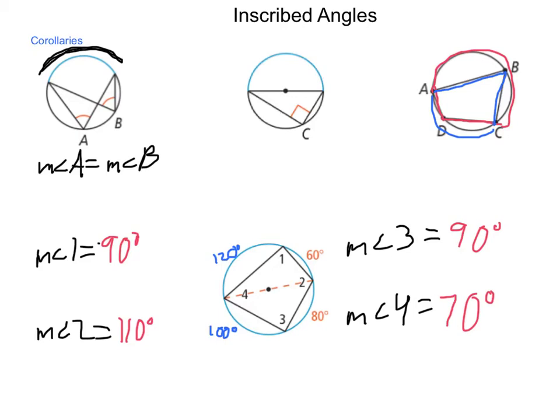But, what happens when we have an angle that moves all the way around the circle to where one of the legs becomes tangent to the circle itself? And, as tangent, we create a chord inside and then a tangent line outside. Let's take a look at that.